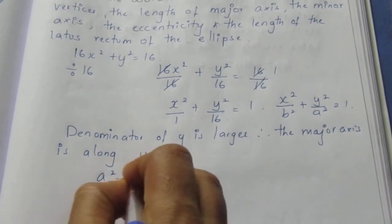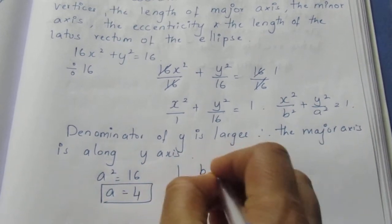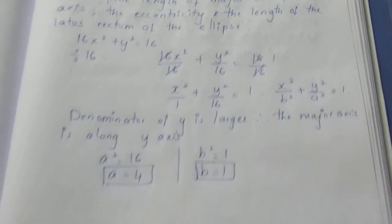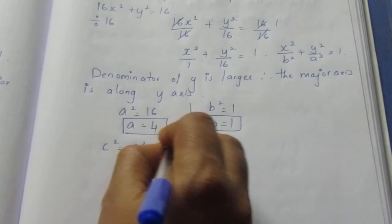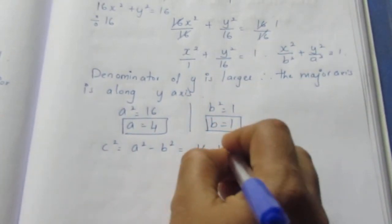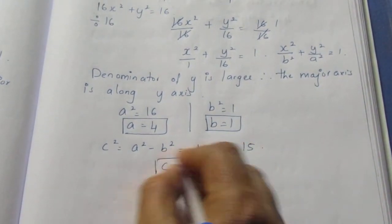So a² = 16, so a = 4. The same way b² = 1, b = 1. Now c² = a² - b², a² is 16 minus 1 which is 15. So c = √15.